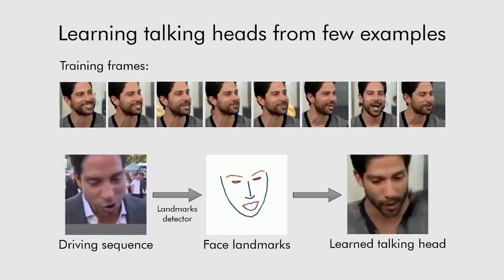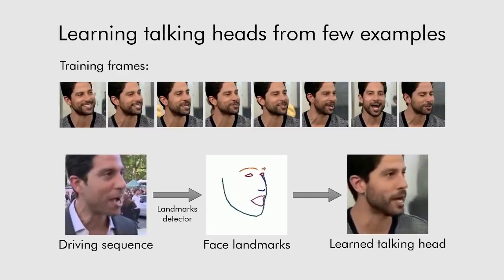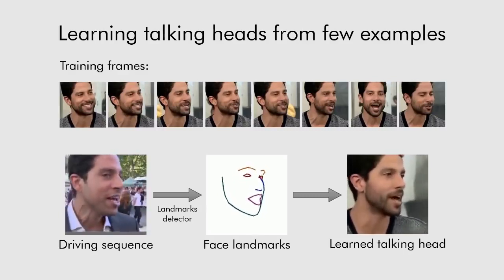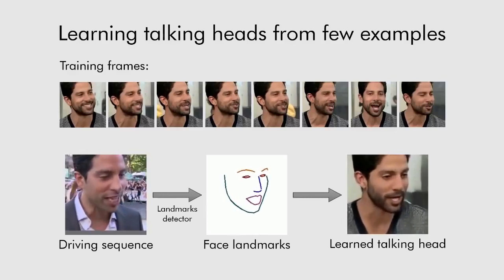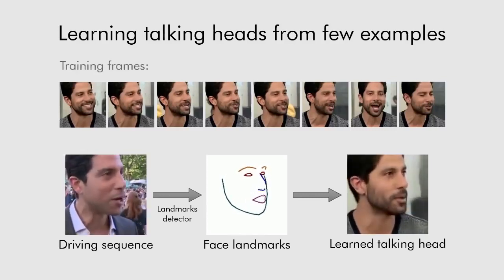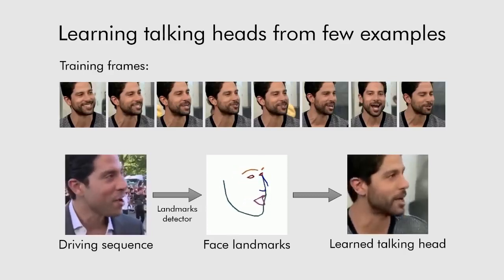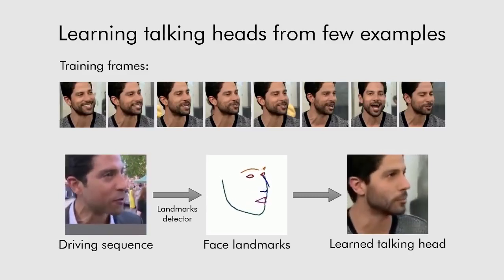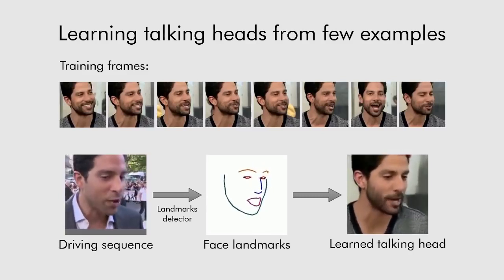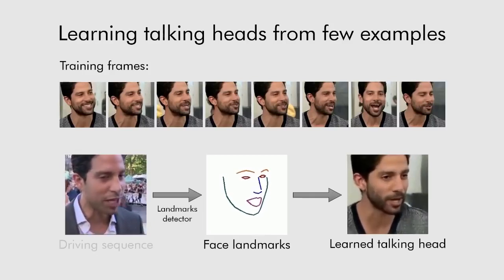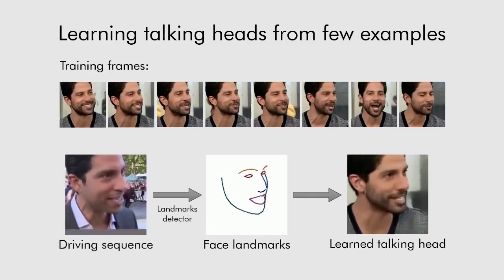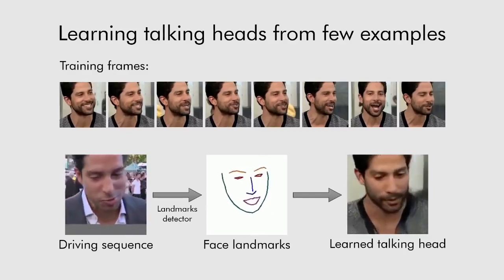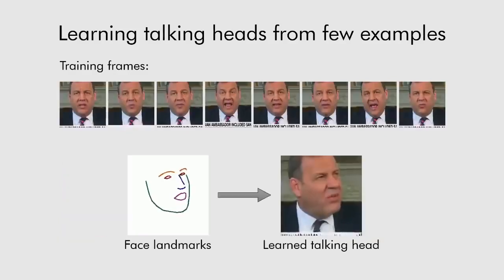We present a system that can learn realistic talking head models. Notably, learning a new head model requires just a handful of images. In this example, the model was learned from eight frames. Once a talking head model is learned, it can be driven by the positions of face landmarks. In this case, we extract landmarks by running an off-the-shelf face landmark tracker on a different video of the same person. Effectively, the learned model serves as a realistic avatar of a person. Our talking head models work well even for new view angles not present in the training examples.